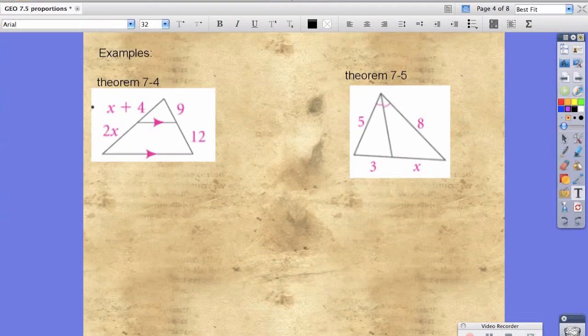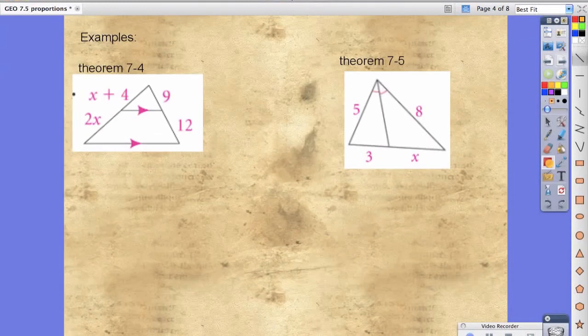Now because this first example is the side splitter theorem, it also comes with that corollary. Where if the two lines are parallel, then what we really need to do is just create the two proportions. And the way we do that is, again,